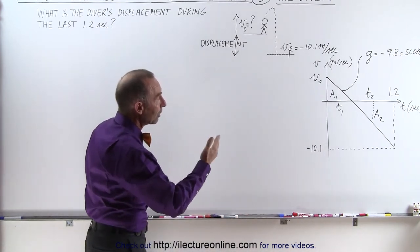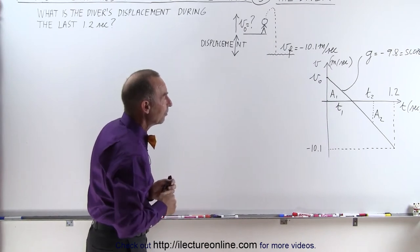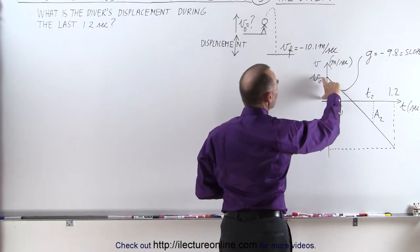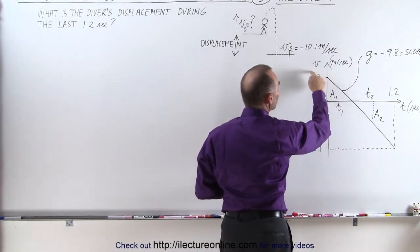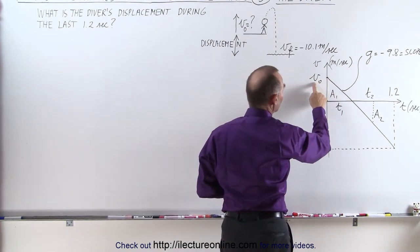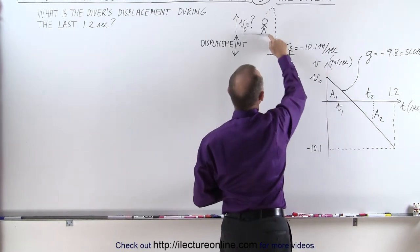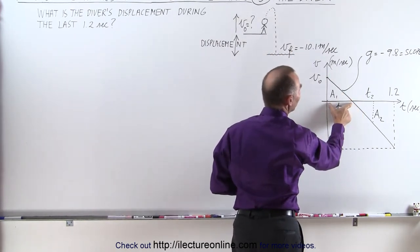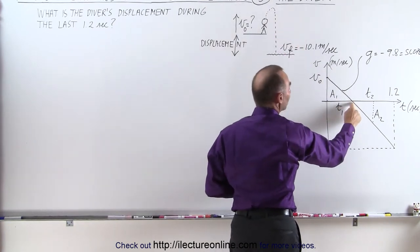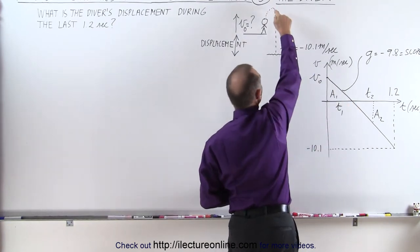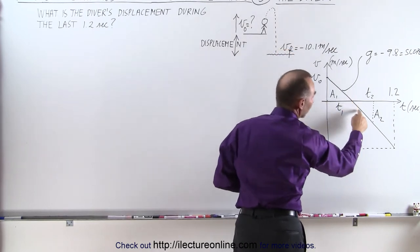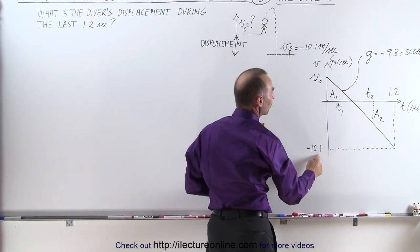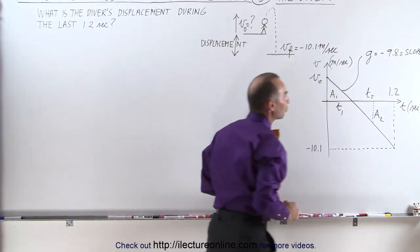If we draw a velocity versus time graph, we can really see what is happening here. The diver starts with a positive velocity going upward at some initial velocity we don't know, and then reaches the maximum height at time t1 — at that point the velocity becomes zero and then negative as the diver starts coming downward. Eventually the diver reaches a speed of minus 10.1 meters per second after a total of 1.2 seconds.